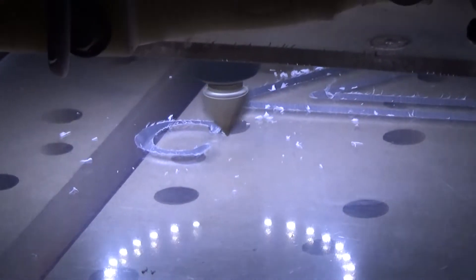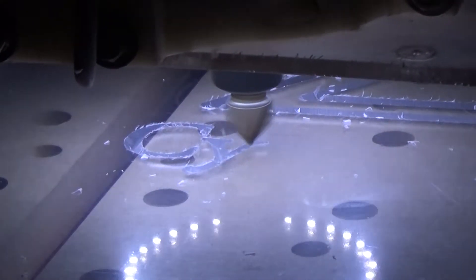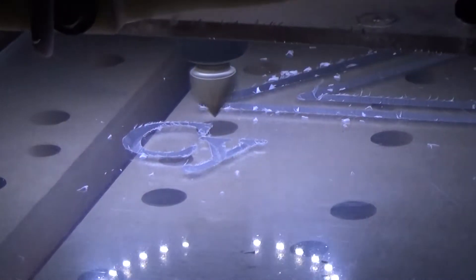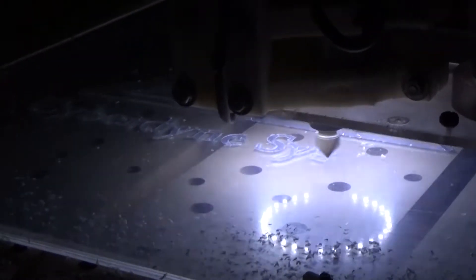The V-Carve G-code that Vectric generates is actually really neat. Instead of just straight line cuts, it almost simulates like a human hand motion with smooth angled plunging movements. It's really cool.